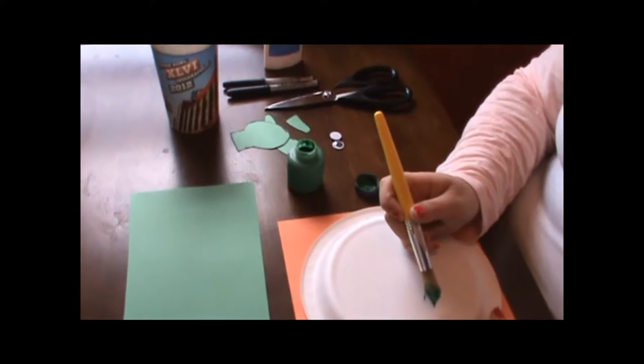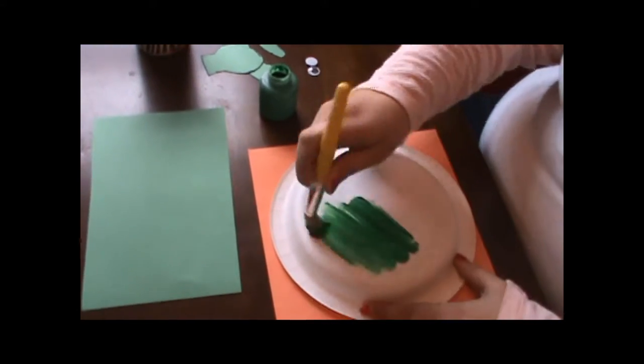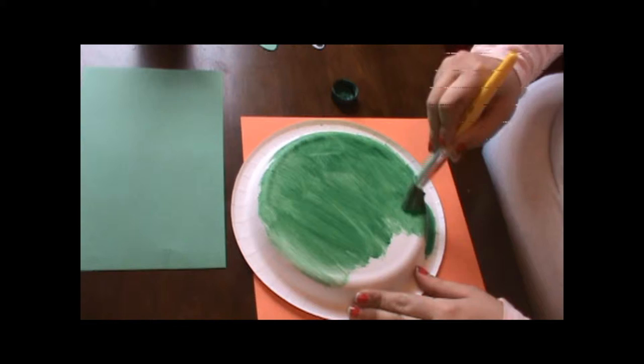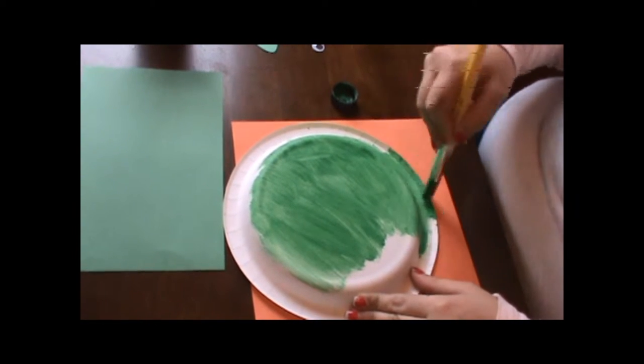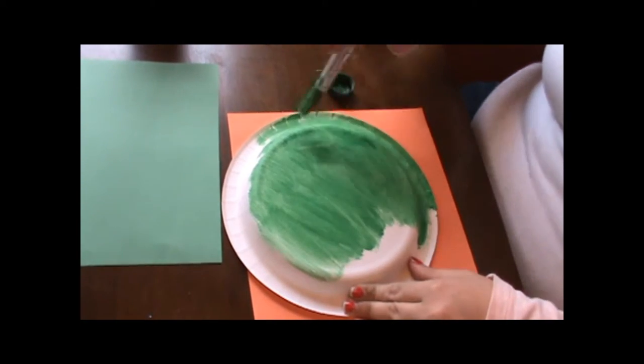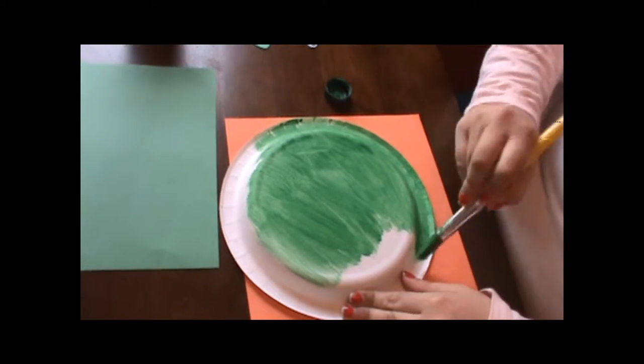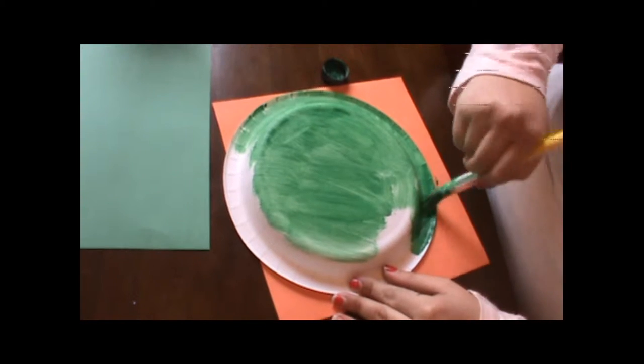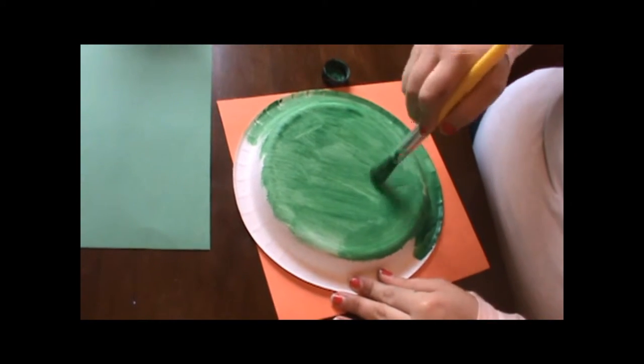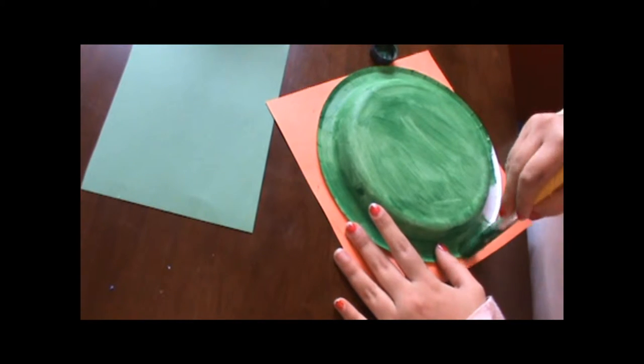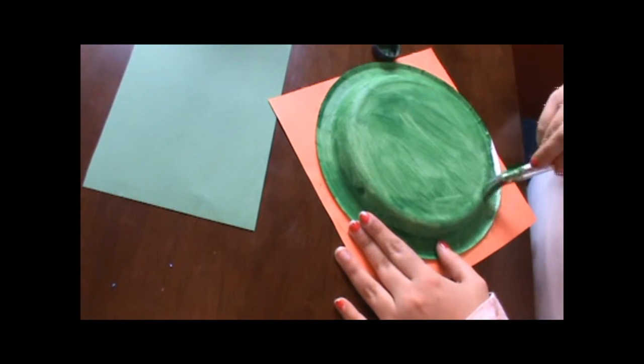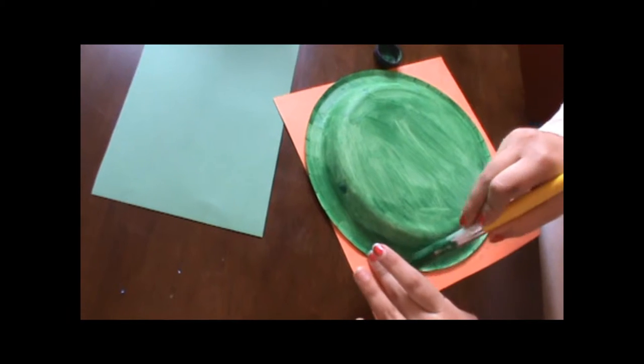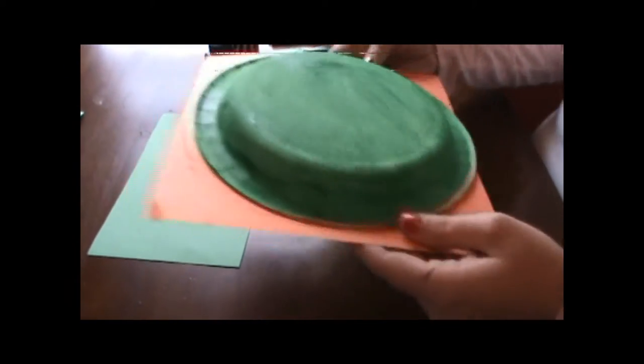The first step is to take your paper plate and paint the whole backside green. Make sure to put a piece of paper or a paper towel underneath so you don't get paint on your table. When you get to the edges make sure you get all the little spaces covered. When you are finished painting the whole thing set it to the side to dry.